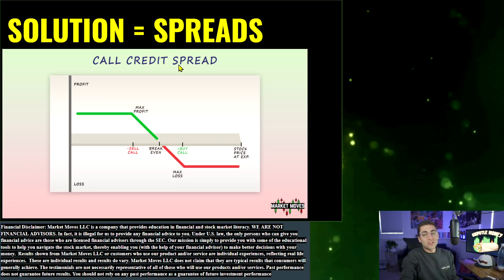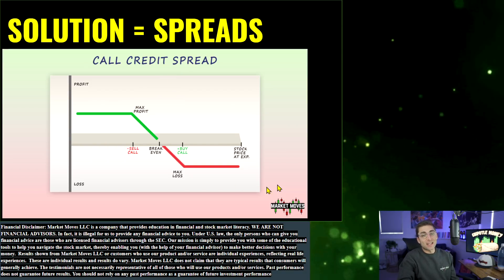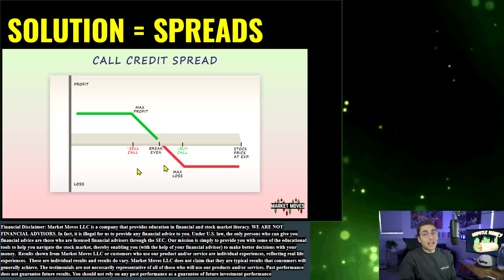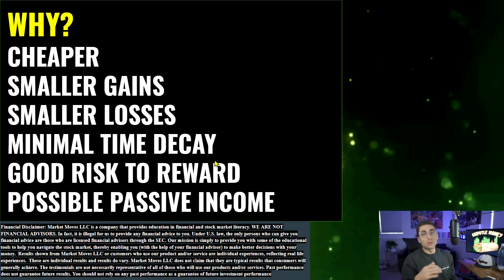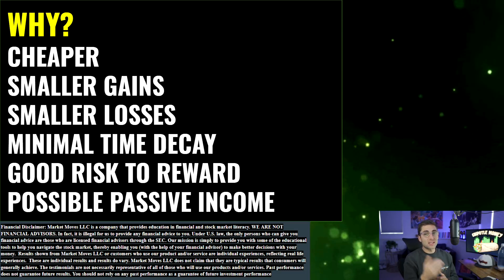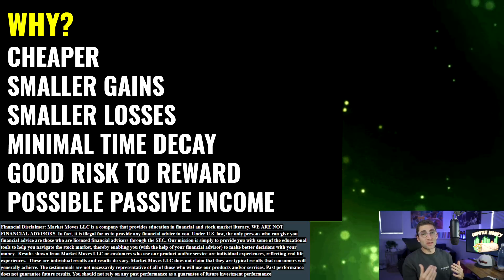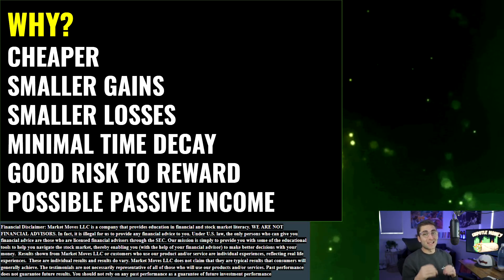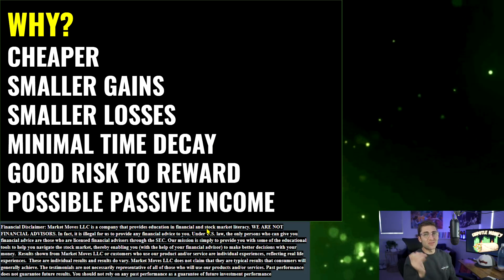The stuff that spreads can allow you to do is very exciting. Here's an example of a call credit spread — it limits the upside and caps the downside. Spreads allow you to get into cheaper contracts for stocks you may not be able to afford, like Tesla and Amazon. They have smaller gains, smaller losses, and minimal time decay. In some cases, that time decay can be in your favor and create passive income.